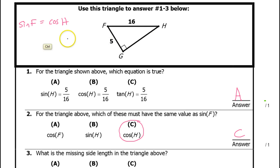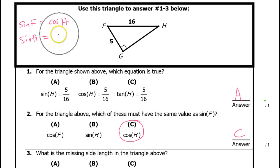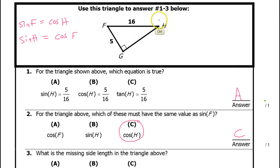By the way, we could have switched it the other way around and said the sine of H, which should equal the cosine of F. So the sine of one angle will equal the cosine of the other angle.